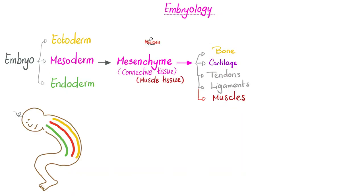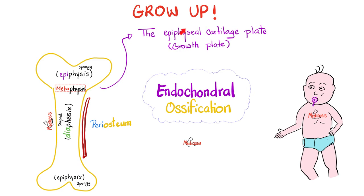Cartilages are mesodermal in origin. Cartilages are connective tissue. Hyaline cartilages exist at the articular surfaces, and also at the epiphyseal cartilage plate, or the growth plate, which helps you grow via endochondral ossification.